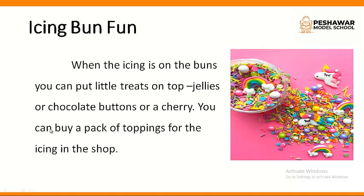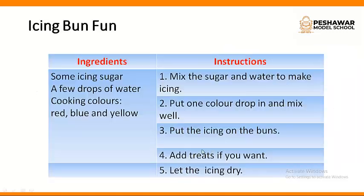You can buy toppings — top treats are jellies, chocolate buttons, or a cherry. You can buy a pack of toppings for the icing in the shop. These sprinkles, cherries, buttons, and jellies can be found in the shop. You can buy those toppings for yourself and then decorate your cake.